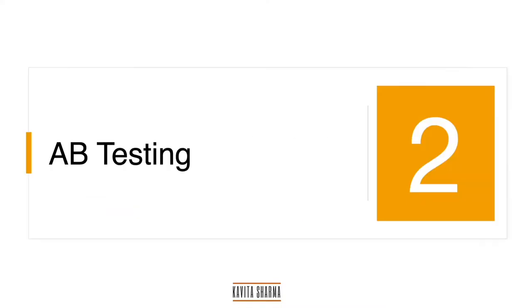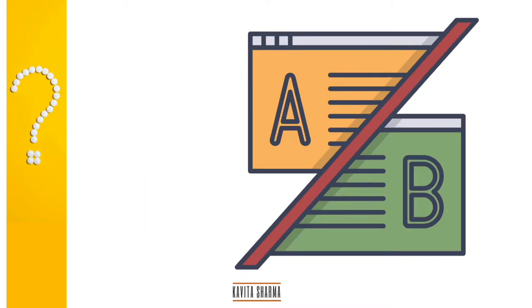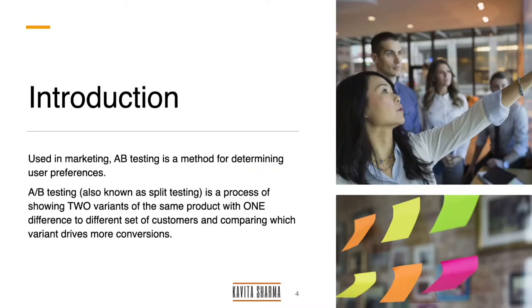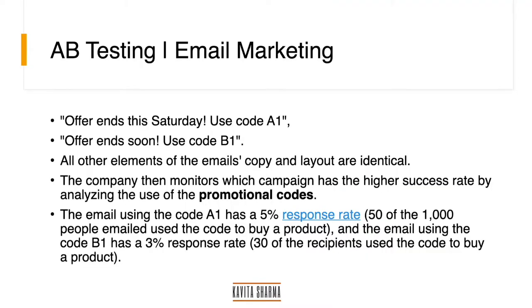Welcome again to the One Concept. Today's concept is A/B testing. What is A/B testing? You might have seen this feature, typically used in marketing. It is used to understand which set of web pages or choices people prefer. It is also known as split testing, wherein two sets of different people are shown different choices, and the one which people like more is selected for the rollout.